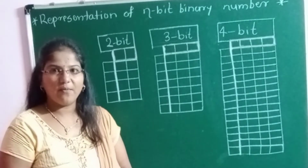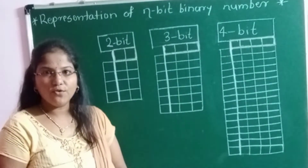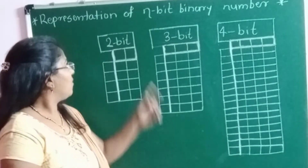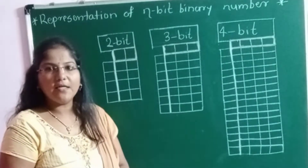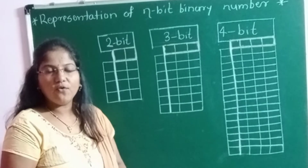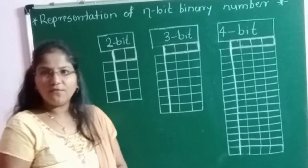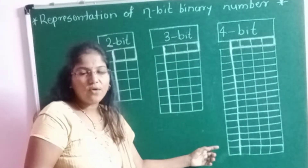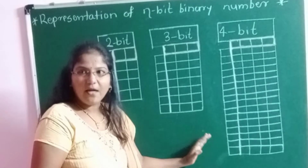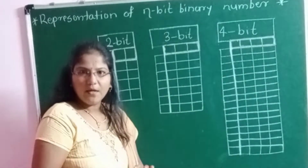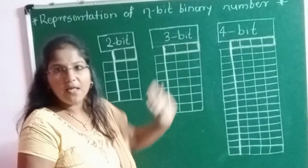Hello everyone, welcome back to my channel HGR Comptech. Today's topic is representation of n-bit binary numbers. We are going to see how to represent binary numbers for 2-bit, 3-bit, as well as 4-bit. After watching this video, you will be able to write any bit binary number — for example, 5-bit, 10-bit, 15-bit, or 20-bit — within a fraction of a second. At the end, I'll share a short trick to remember the whole table.